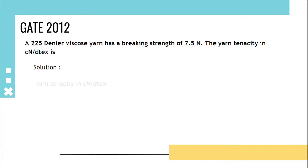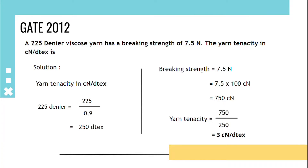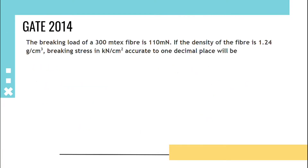Yarn tenacity in centi-newton per deci-tex is required. Given that it is 225 denier, by dividing by 0.9 we get 250 deci-tex. Breaking strength is given as 7.5 newton; to convert it to centi-newton it is multiplied by 100, giving 750 centi-newton. So yarn tenacity will be 750 upon 250, that is 3 centi-newton per deci-tex.